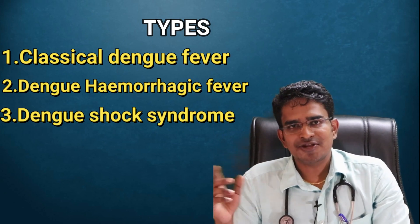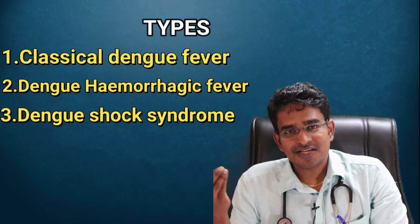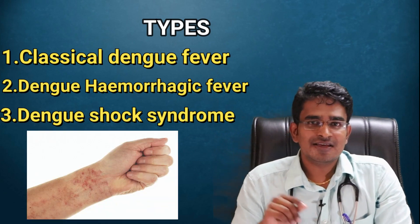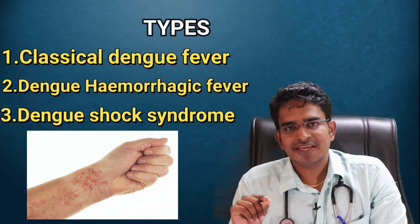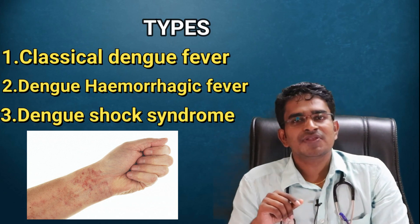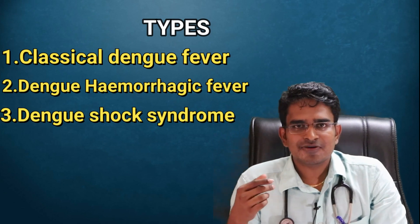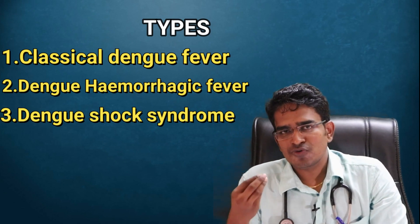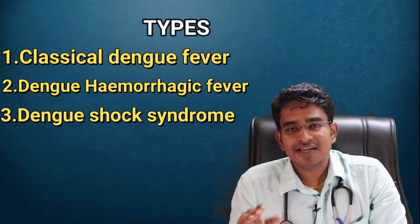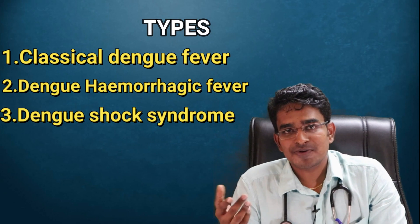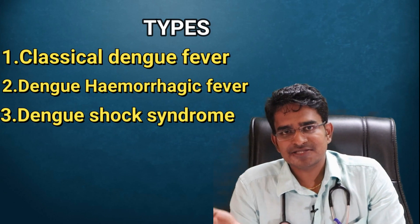The second type is Dengue hemorrhagic fever. This involves hemorrhage affecting the mucous membranes and skin. The third type is Dengue shock syndrome, which involves very low blood pressure. Dengue shock syndrome has a mortality of around 44% in untreated cases.